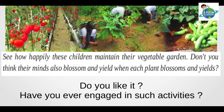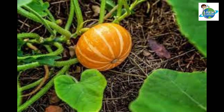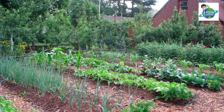Have you ever engaged in such activities? What do you see in these pictures? Now listen to Babu. A pumpkin vine that sprouted on its own in the backyard of the kitchen was ready to spread. He made a furrow around it, manured and watered it. It grew well but yielded only 2 or 3 pumpkins. Do you have a vegetable garden at your home? Which are the vegetables you have in your vegetable garden? Do they yield well always?